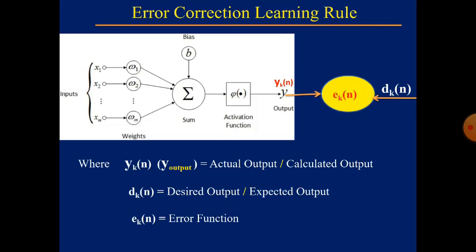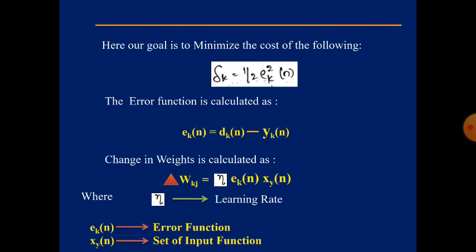The main objective is to minimize the cost. The cost formula is: Δk = ½·ek(n)². Since Δk is directly proportional to ek(n), in order to minimize the cost we must minimize the error function. If we reduce the error function, the cost will automatically be minimized.